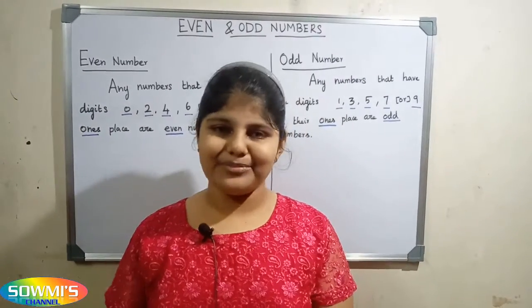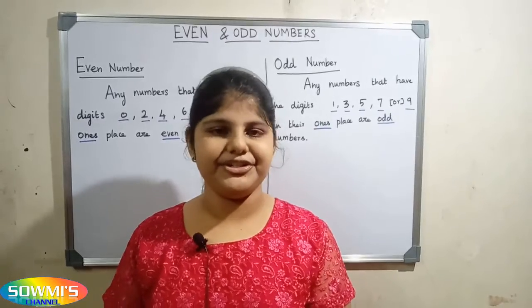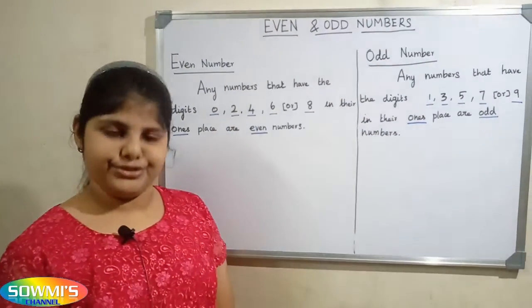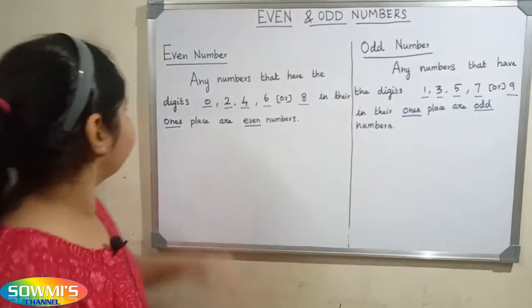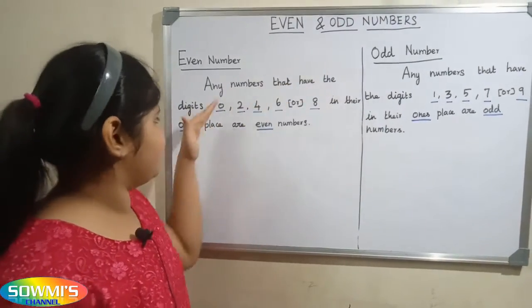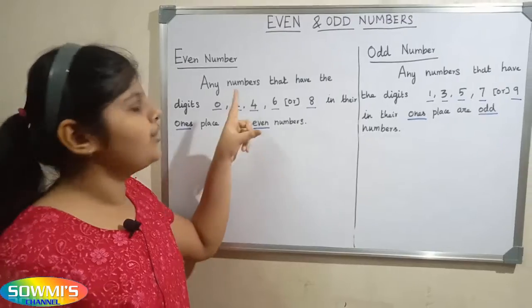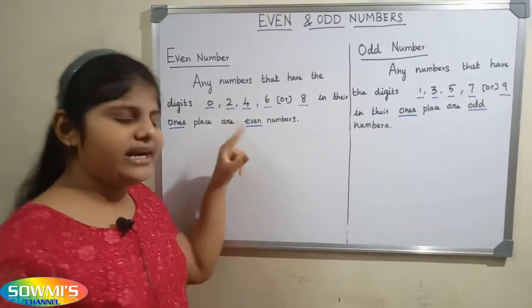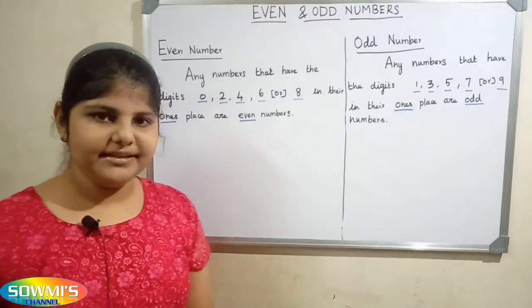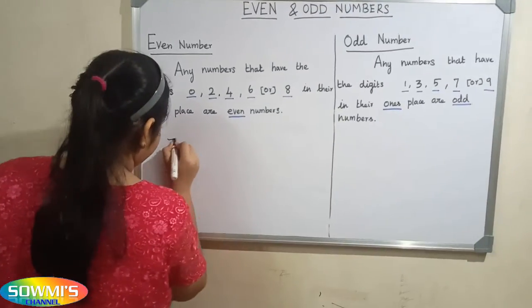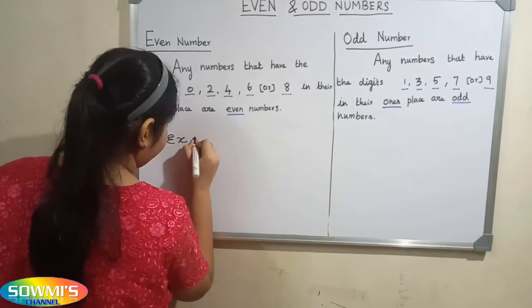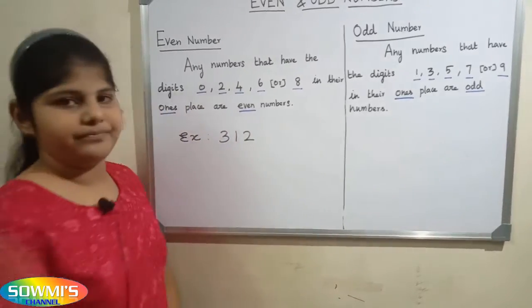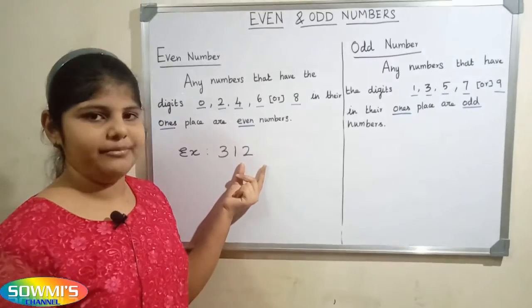Hi friends, this is Samish's channel. In this video we are going to talk about even numbers and odd numbers. Do you know what is meant by even numbers? Any numbers that have the digits 0, 2, 4, 6, or 8 in their ones place are even numbers. For example, 312 — look at this number.